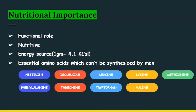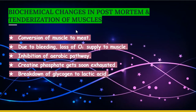We will also discuss biochemical changes in post-mortem and tenderization of muscles. Meat consists of flesh and edible parts of animals like cattle, sheep, and swine which are used for food — not only muscles and fat, but also tendons and ligaments. There are basically six types of meats: pork, beef, chicken, duck, turkey, and lamb and mutton.